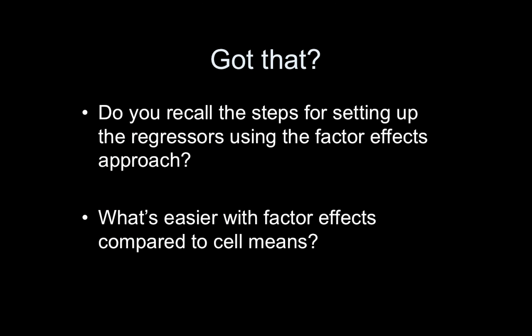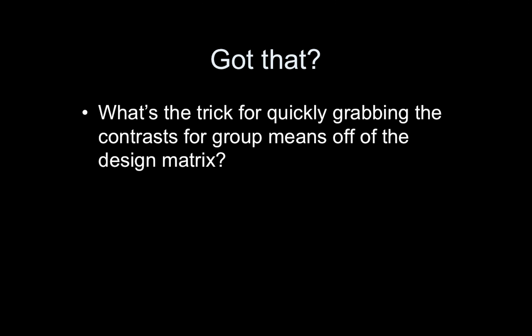Make sure you have all of that. Do you recall the steps for setting up the regressors using the factor effects approach — how to create those regressors of ones, zeros, and minus ones? What's easier with factor effects compared to cell means, and what's the benefit of using factor effects? What's the trick for quickly grabbing the contrasts for the group means off of the design matrix — you should be able to just see it and grab it. That's all I've got. Please join the Facebook group called Mumford Brain Stats. Thanks for your time, and I hope you have a fabulous day.